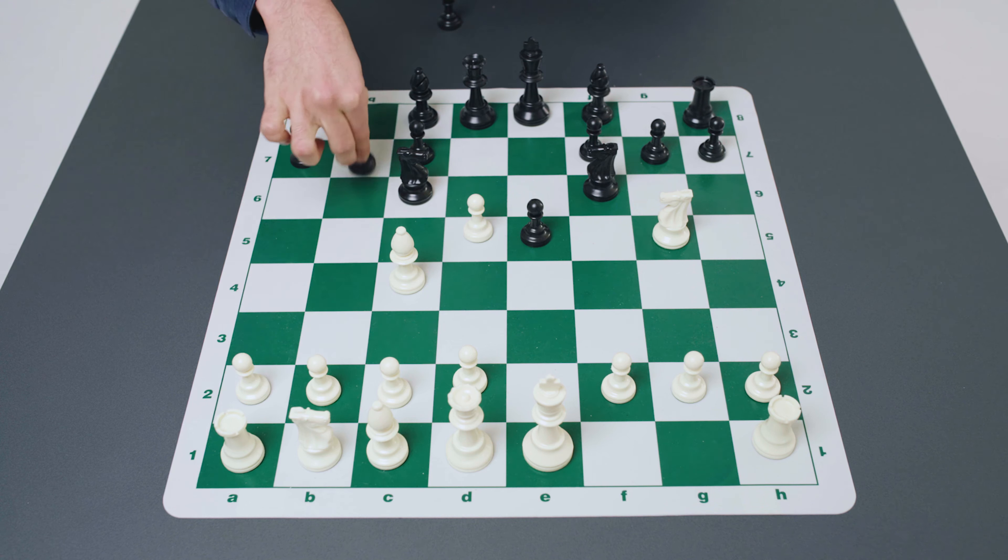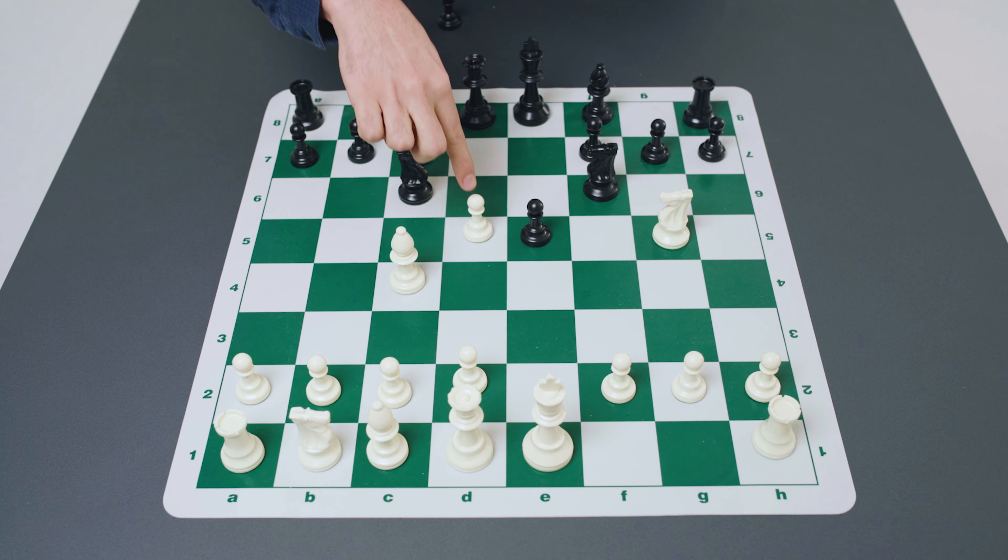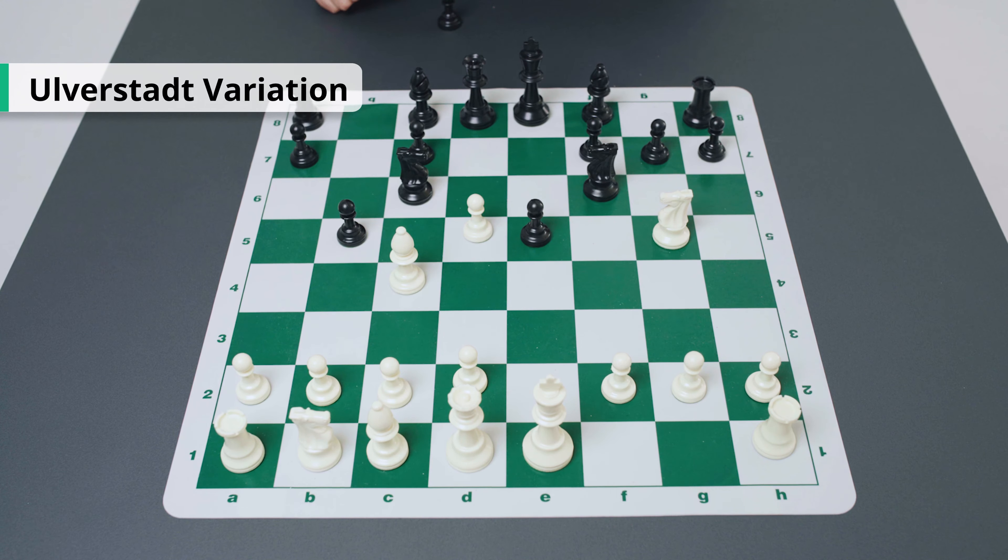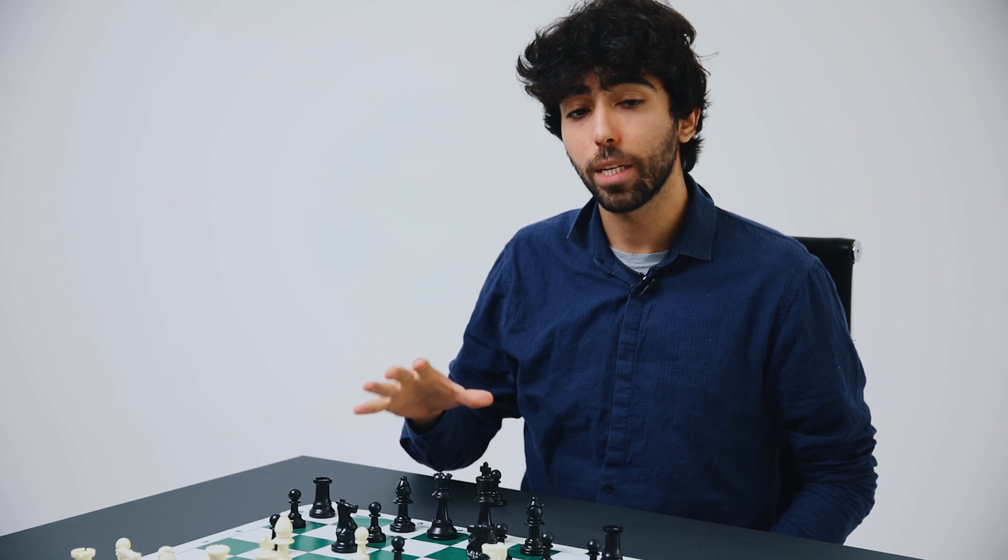Now black can respond in a variety of ways. By far the main move is pawn to d5. After pawn to d5 white will capture and here beginners fall victim to this trap all the time.